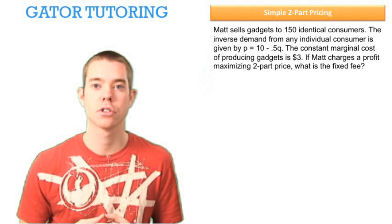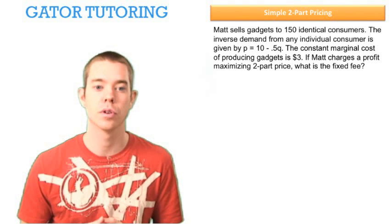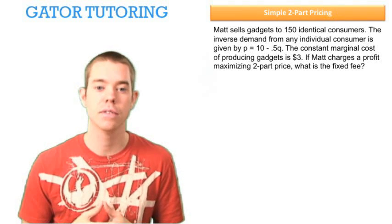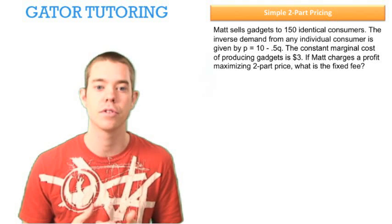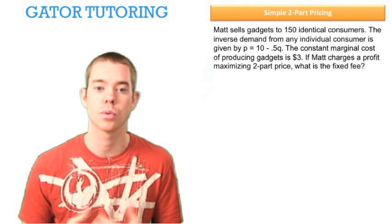Matt sells gadgets to 150 identical consumers. The inverse demand from any given customer is given by price equals 10 minus .5Q. The constant marginal cost of producing gadgets is $3.